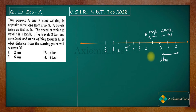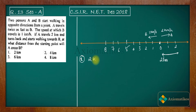Now let us try to solve this problem by checking the options. The question asks: at what distance from the starting point will A cross B? Let us begin with option one, which says A is going to cross B at two kilometers — the distance measured from the starting point.